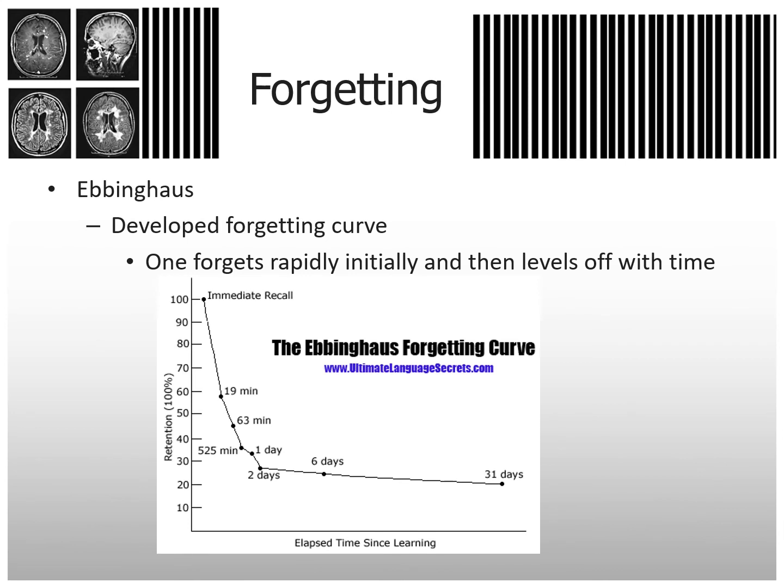Forgetting — Ebbinghaus. This is the Ebbinghaus forgetting curve, something you should know. He developed this curve, and it says one forgets rapidly initially and then it levels off with time. If I say something and immediately ask what I said, we have pretty much 100% recall.